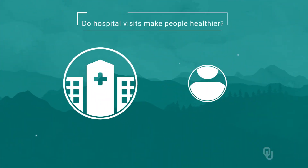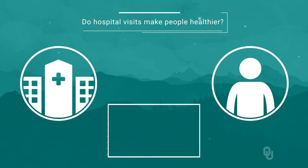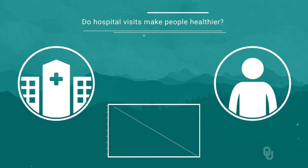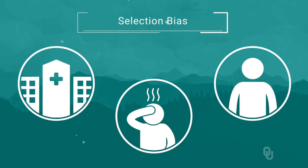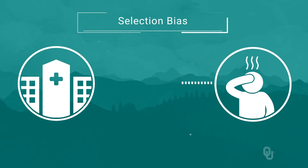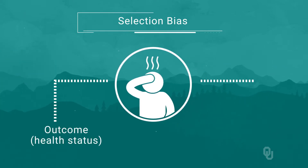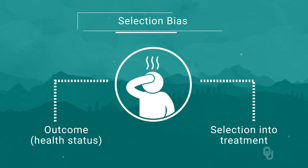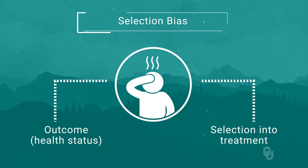Let's consider another example: do hospital visits make people healthier? As your textbook shows, the correlation between going to the hospital and reported health status is strong and negative. Does that mean going to hospitals makes you sicker? Well, maybe — but again, we have a problem with selection bias. Who tends to go to the hospital? People who are already sick. So being sick is correlated with the outcome, or health status, and correlated with selection into treatment — a classic case of selection bias. Which means the negative correlation between hospital visits and health status doesn't mean that going to the hospital makes you sicker.